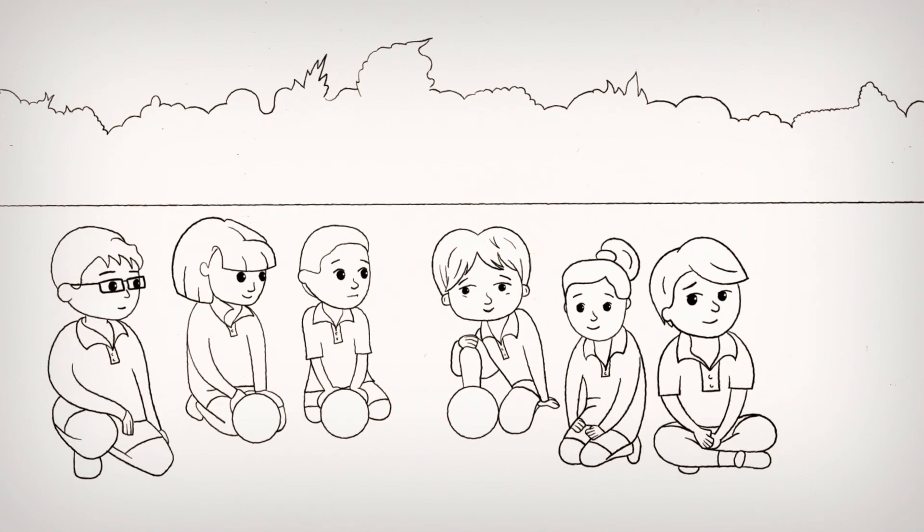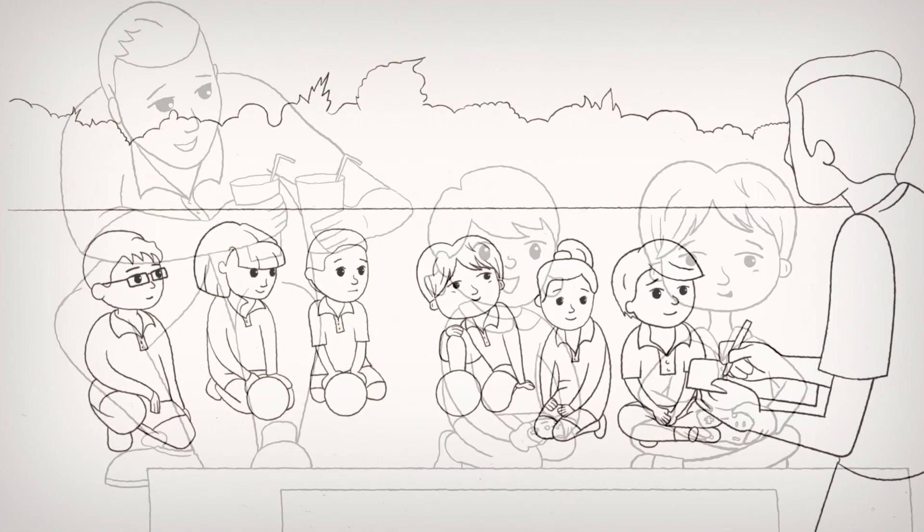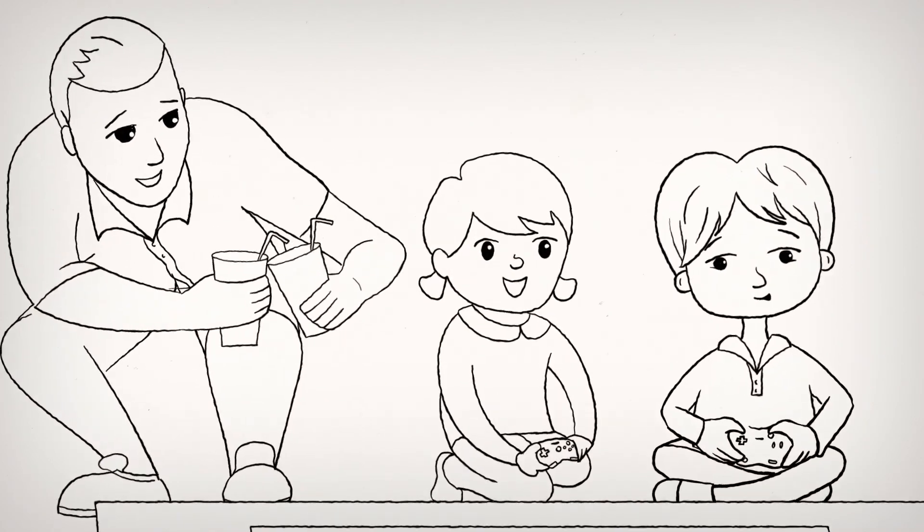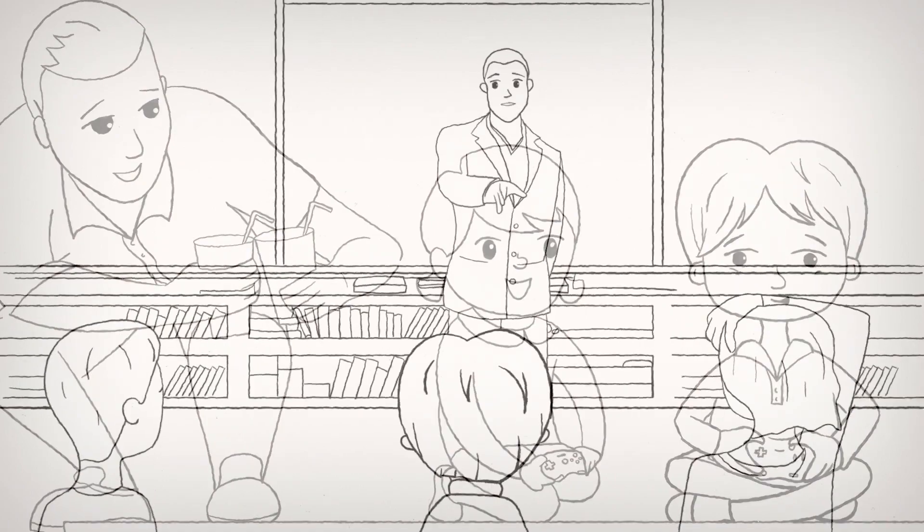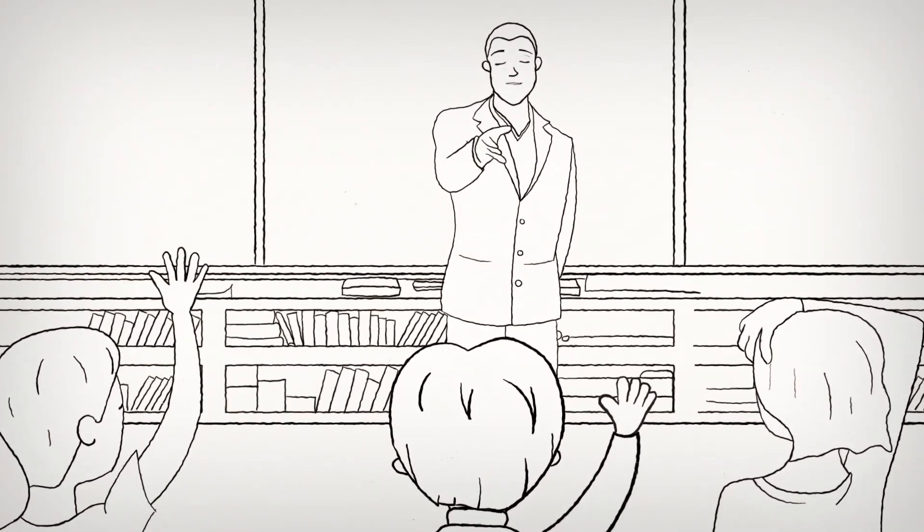Children go to many places where they are looked after by different adults. Sports clubs and other friends' houses being some examples. So when we cannot be by their side, they need tools and knowledge to understand if something is happening to them and that they can tell us.